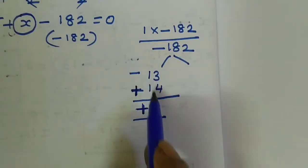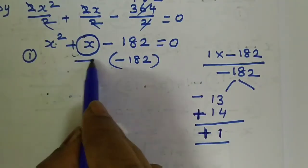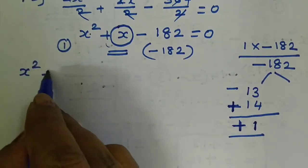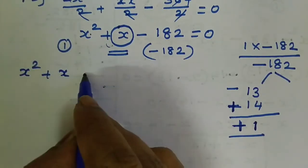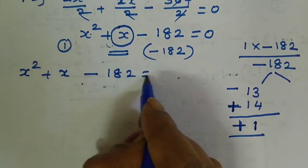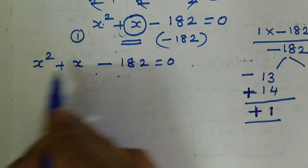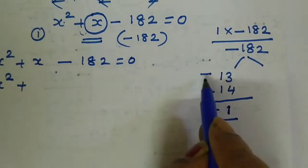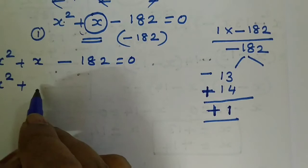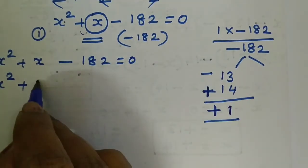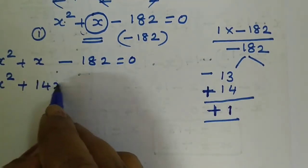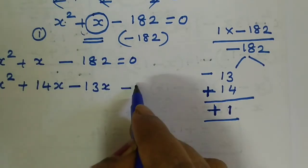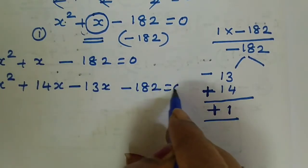Now substitute these factors in place of x: x squared plus x minus 182 equals 0 becomes x squared plus 14x minus 13x minus 182 equals 0.